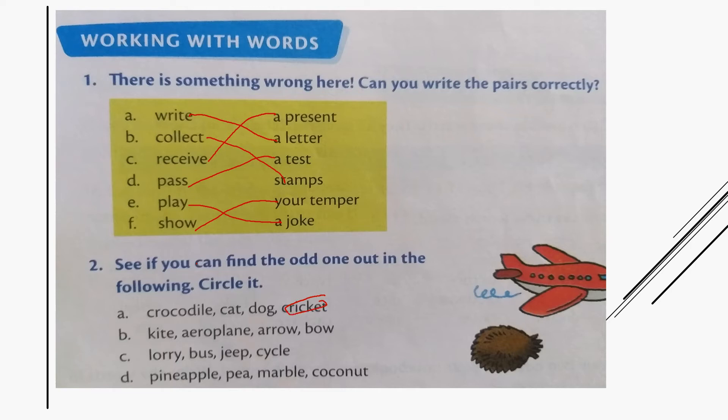Why? Because cricket is a game. Crocodile, cat, dog are animals. Coming to the second one: kite, aeroplane, arrow, bow. So bow is the odd one here. Why? Because kite, aeroplane, and arrow fly, but bow doesn't fly in the air.